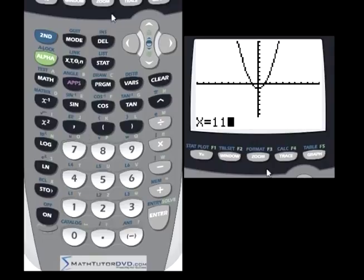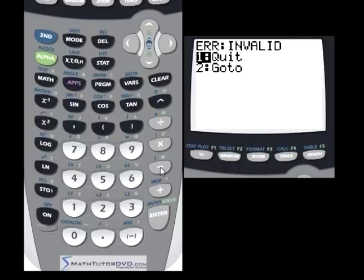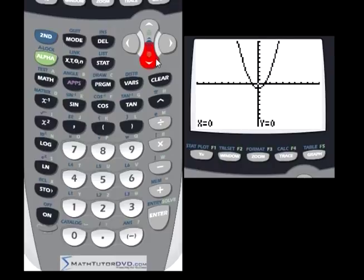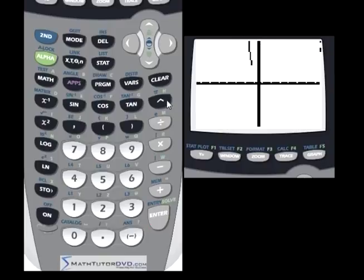It's going to say error. But if you go to zoom and zoom out a little bit, let's go to number three. Let me center it right here. We hit enter. Then I should be able to go into the calculate menu value and put X equals 11 in. At that point, it should calculate the value for me. The reason it's going to work in this case is because I've zoomed out, so the calculator has actually calculated the proper values and can tell you what they are.